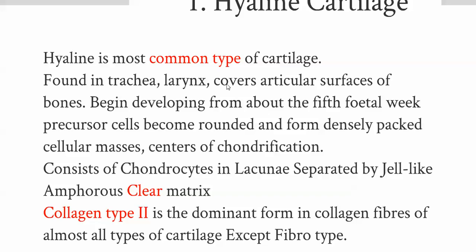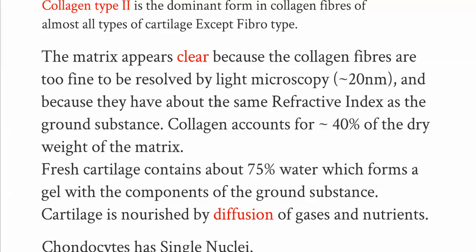Hyaline cartilage is the most common type. It is found in the trachea, larynx, articular surfaces of bones, and begins developing from about the fifth fetal week. The cells are chondrocytes within lacunae. The dominant fiber is collagen type 2. The matrix appears clear because the collagen fibers are too fine to be resolved by light microscopy and have about the same refractive index as the ground substance.